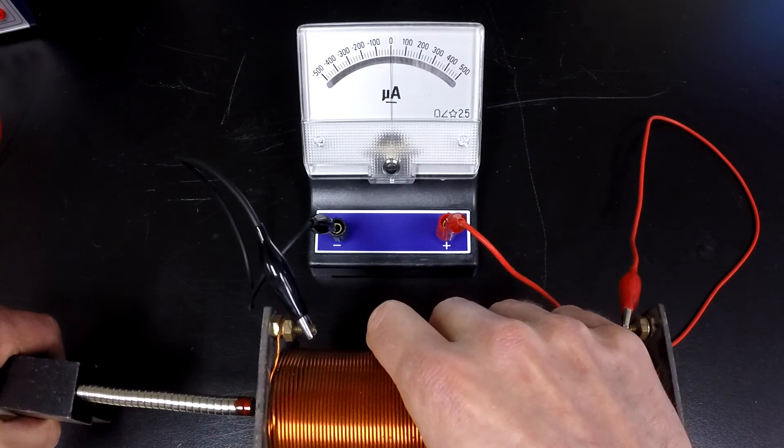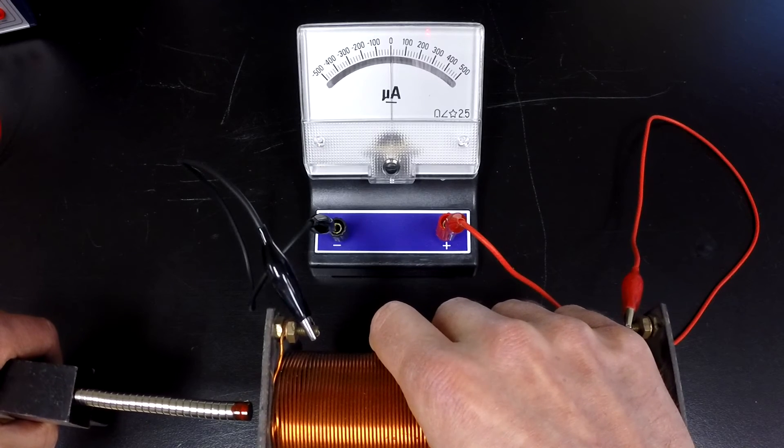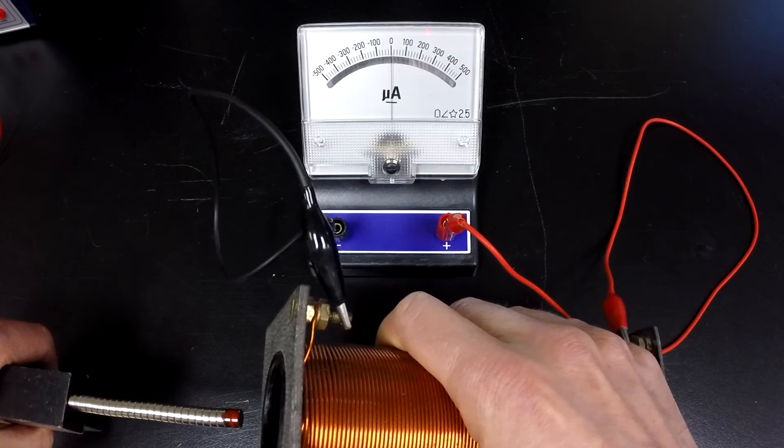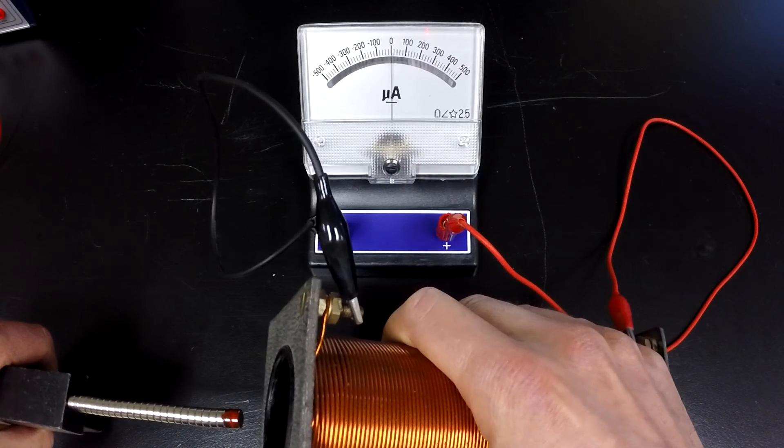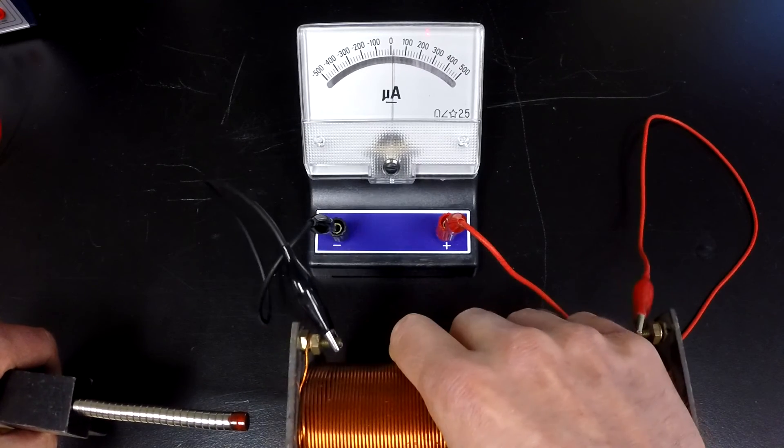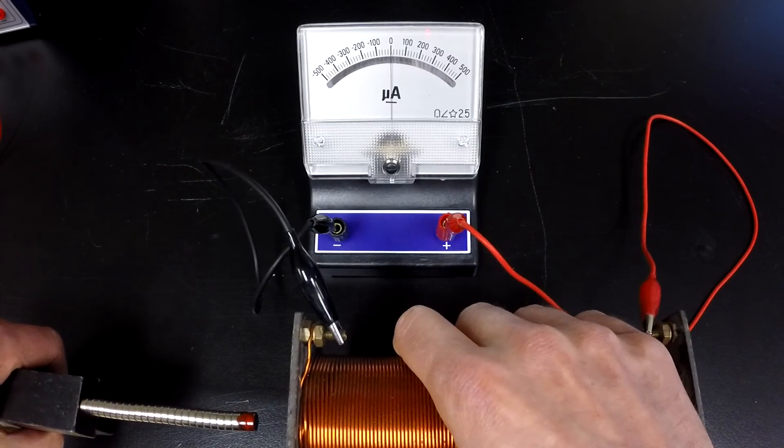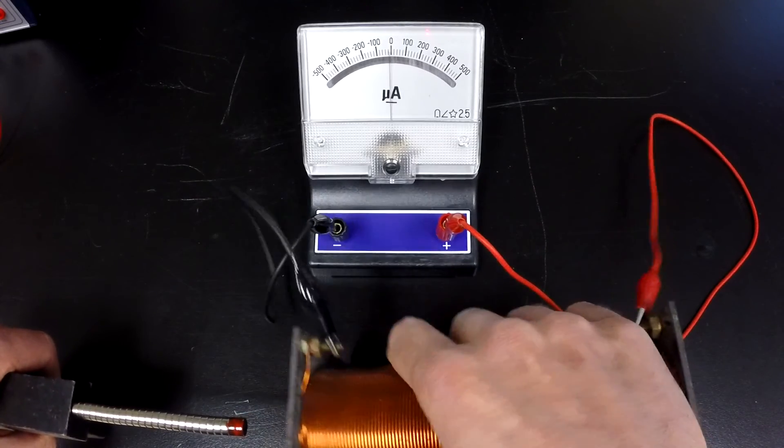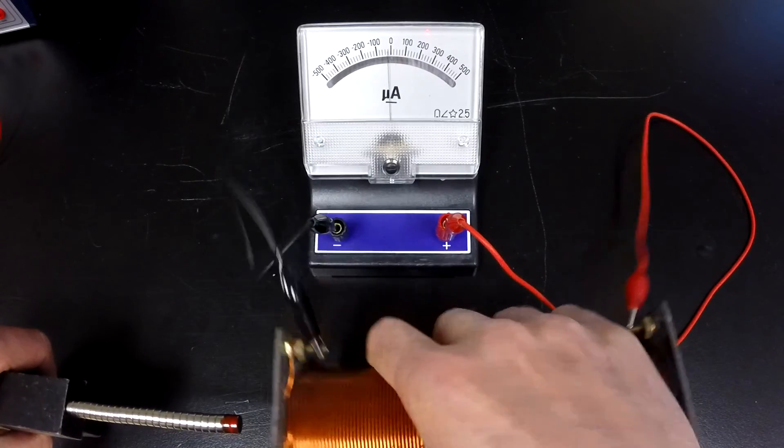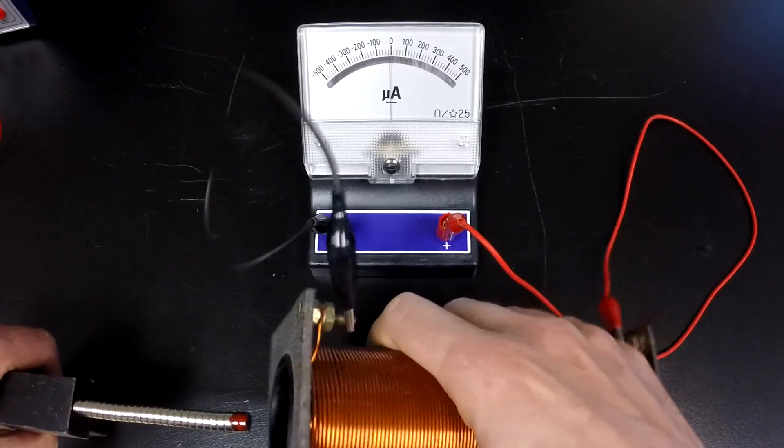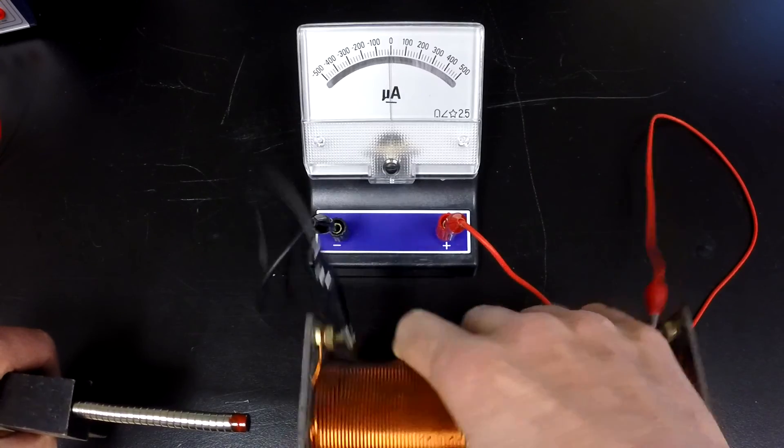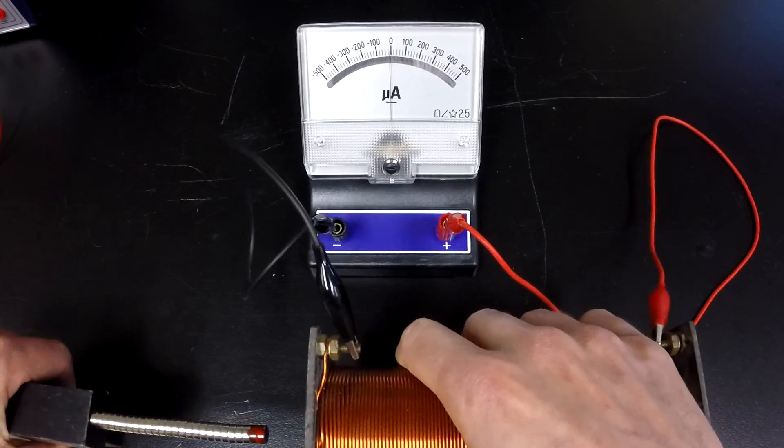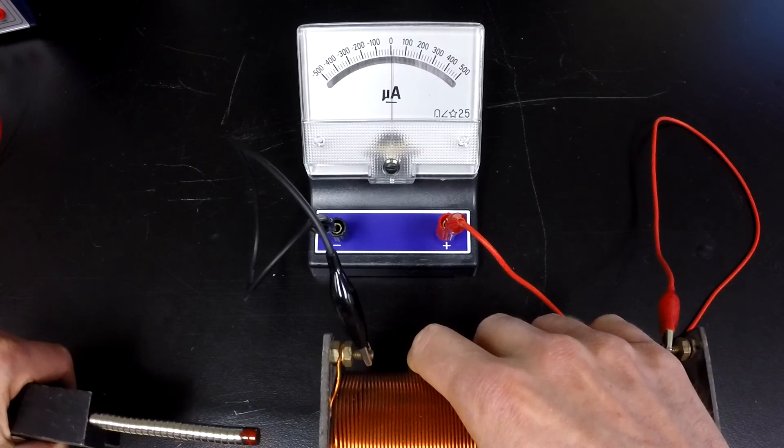So when I rotate the coil up, so I rotate it out of the plane or out of the magnetic field lines, you can see that there is an induced current in a particular direction. When I rotate it back in, there's an induced current in the opposite direction. So we can also induce a current in a coil of wire by rotating or spinning the coil of wire in a constant direction magnetic field. So we now have three ways of inducing a current.